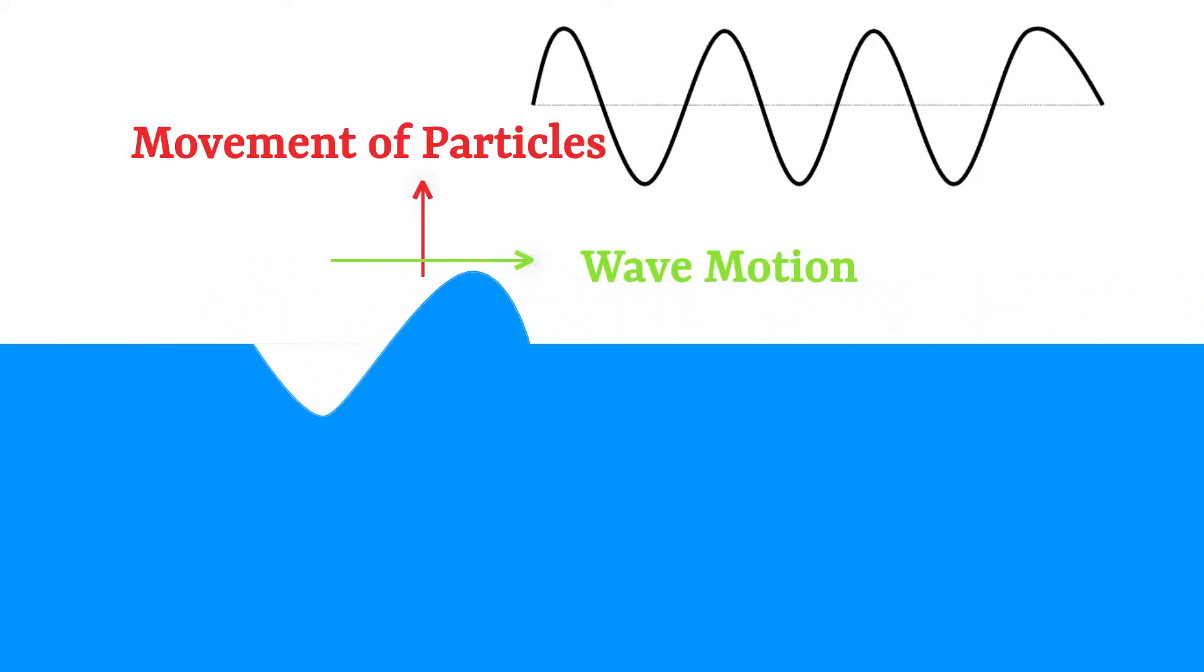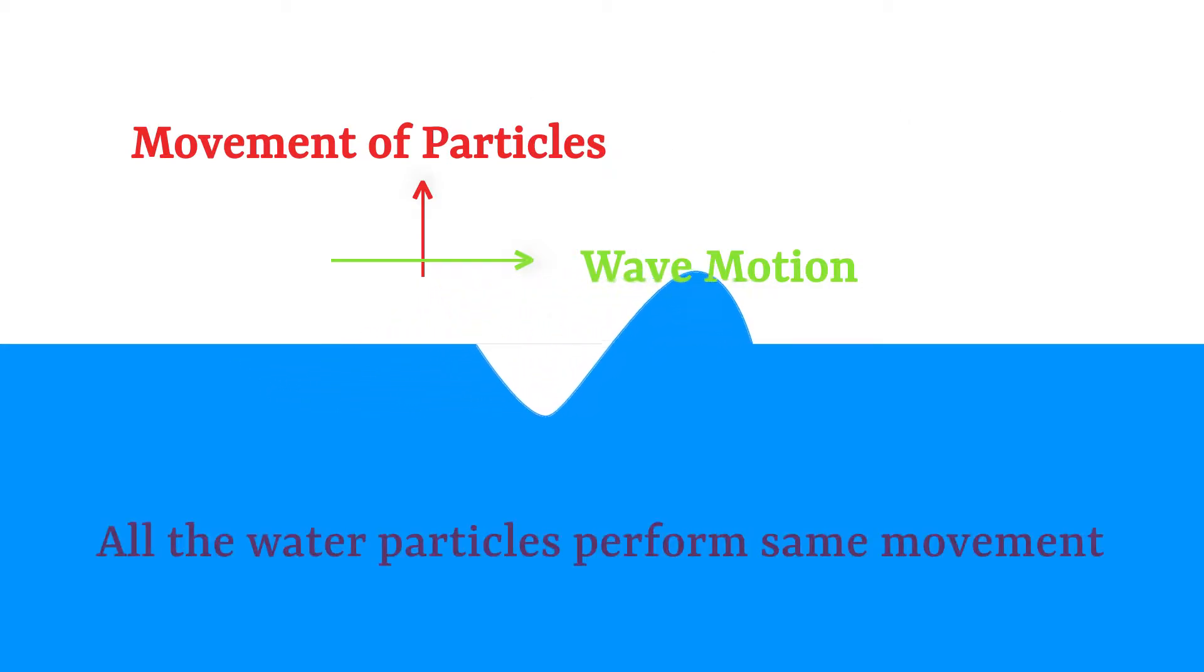Here, the horizontal line denotes the direction in which ripples are traveling and the vertical direction shows the direction of movement of water particles. You can see here that particles in water perform the same type of motion.